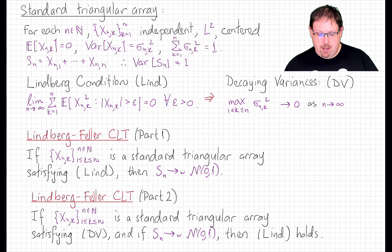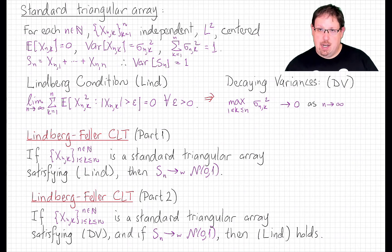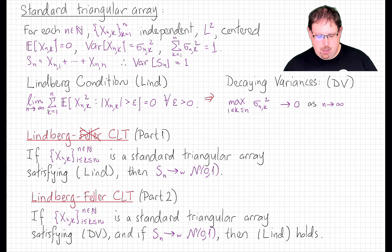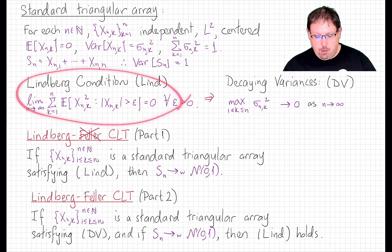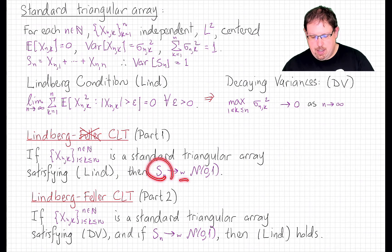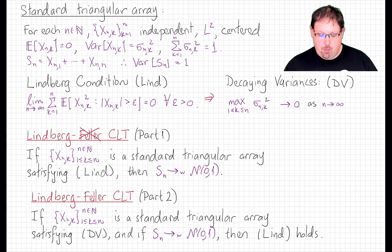The Lindbergh-Feller central limit theorem has two parts, which we stated as a kind of if and only if last time, but let's state them as two separate parts this time. The Lindbergh central limit theorem, which is what Lindbergh originally proved, states that if the Lindbergh condition holds for the standard triangular array, then the sum of the nth row does converge weakly to a standard normal random variable.